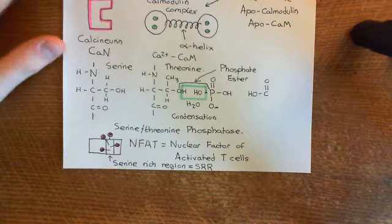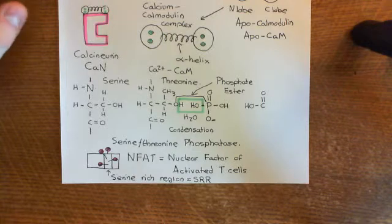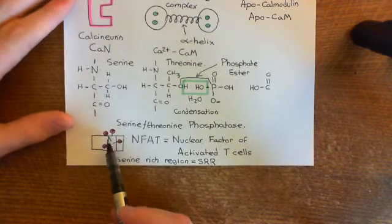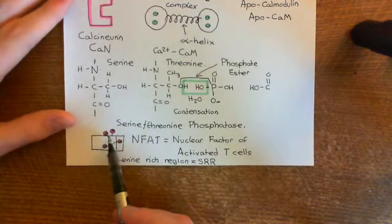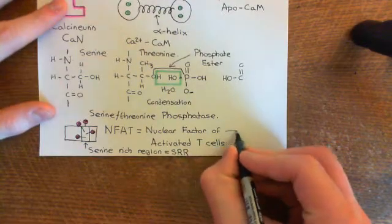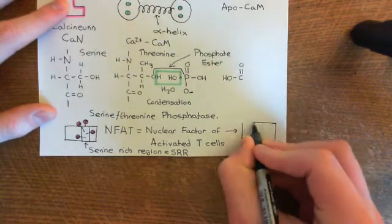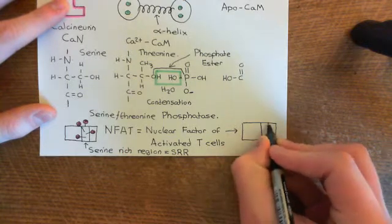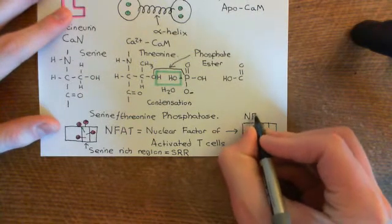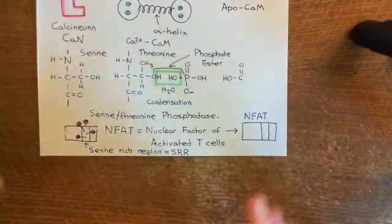We have just activated an enzyme which is a serine-threonine phosphatase that removes phosphate groups from serine and threonine residues. So calcineurin is going to come over and remove these phosphate groups from the serine residues in the serine-rich region of NFAT. This leads to the activation of NFAT, and now it can migrate into the nucleus where it's going to act on the DNA.